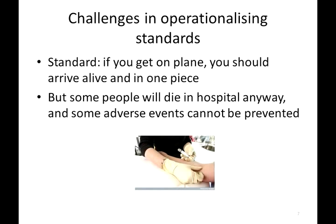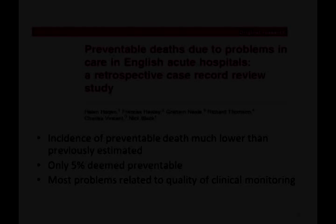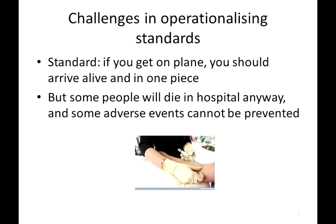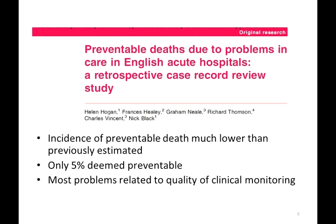One problem in making healthcare safe is deciding what the standards should be. In some areas where regulation is important, such as aviation, it's fairly easy to set the standard: if you get on a plane you should have a reasonable expectation of arriving alive. The problem with healthcare is that patients may die anyway, and some adverse events cannot be prevented no matter how safe our systems are. What is now becoming clear is that the incidence of preventable death is much lower than previously estimated. A British study published in 2012 estimated that only 5% of deaths in hospital are preventable, and that many problems relate to quality of clinical monitoring rather than catastrophic errors.